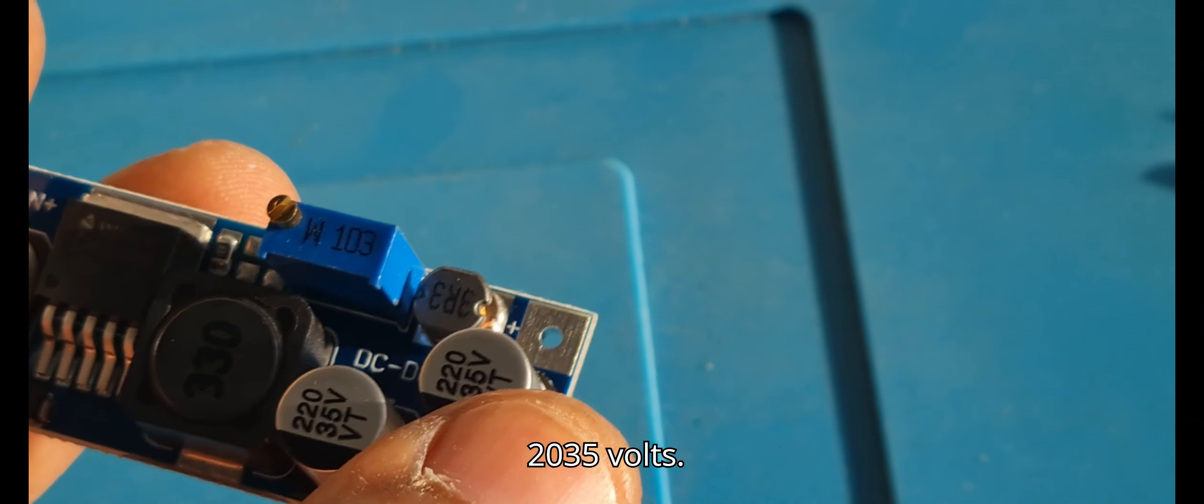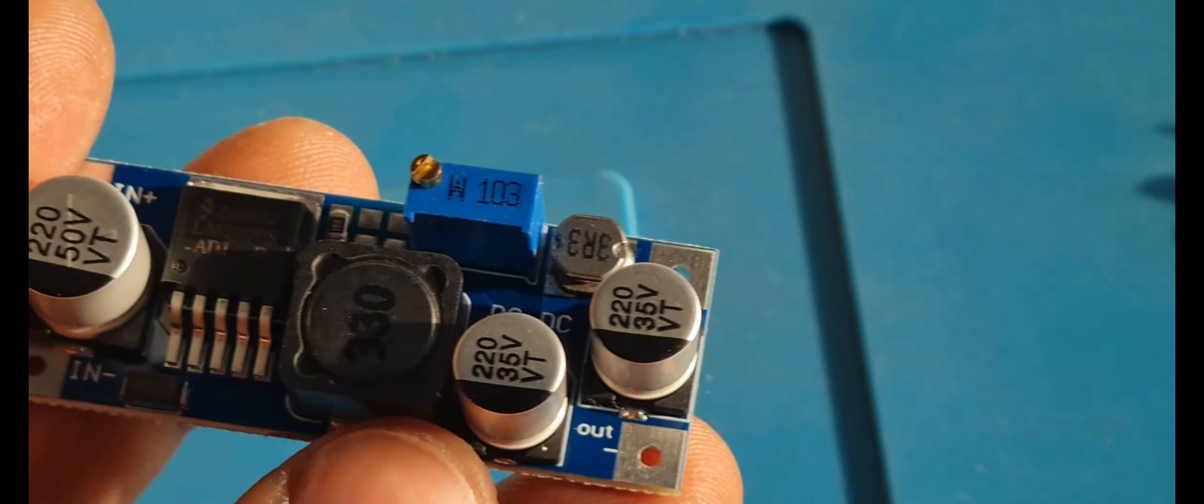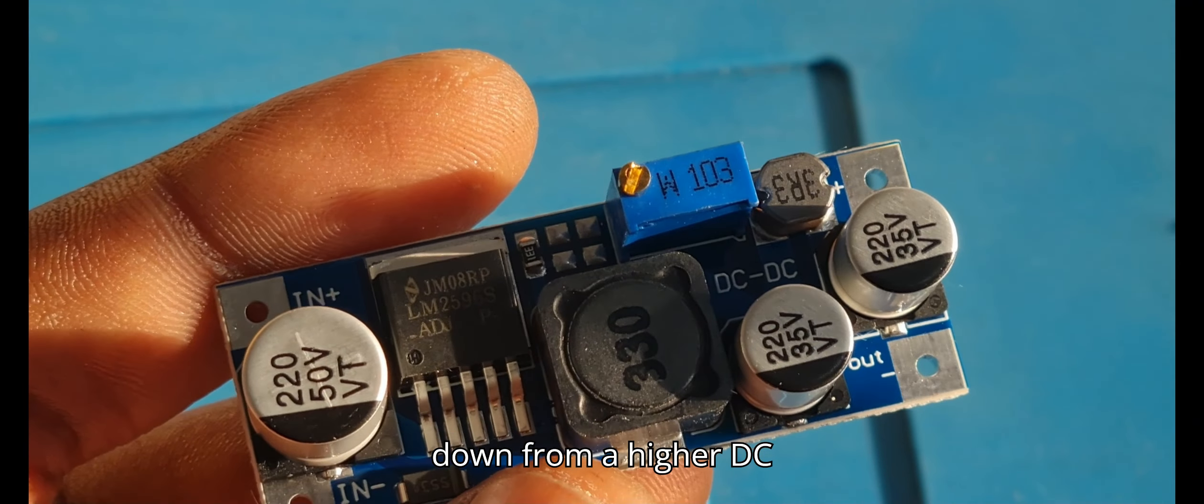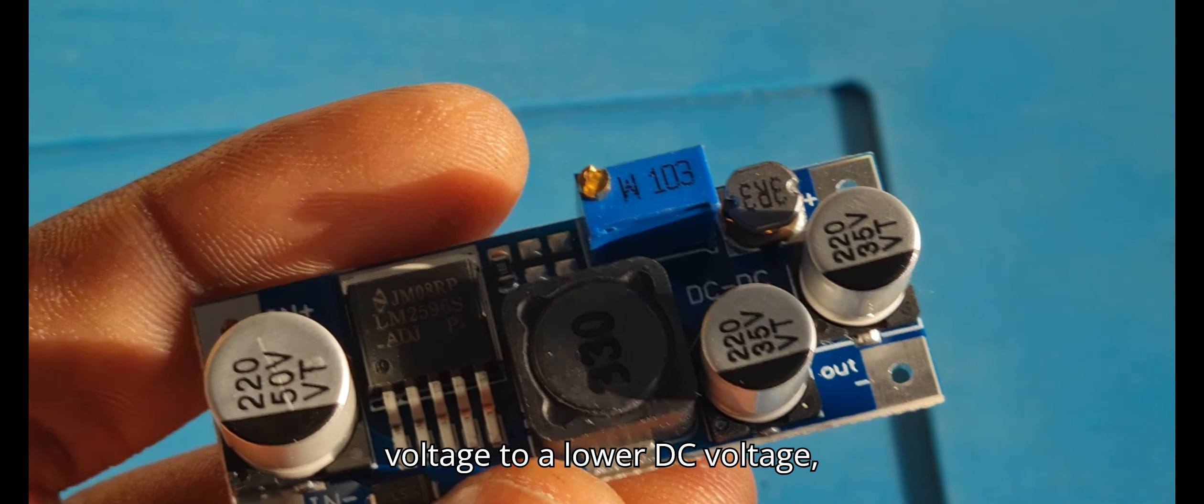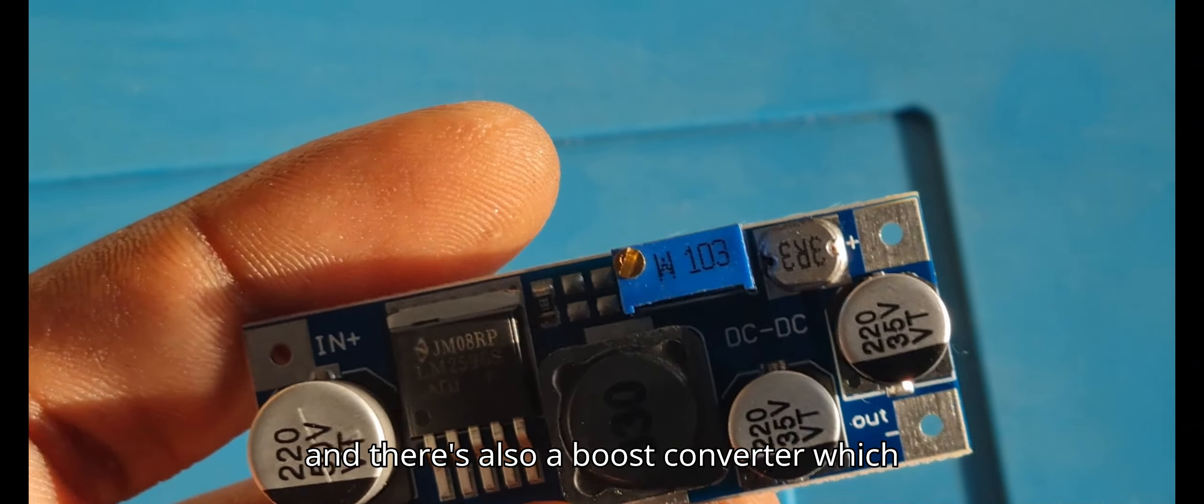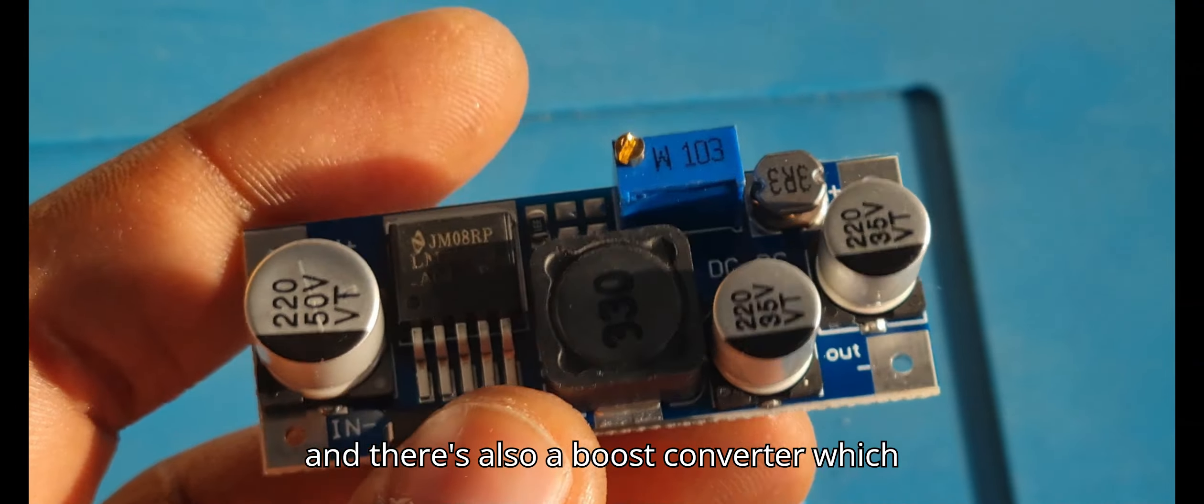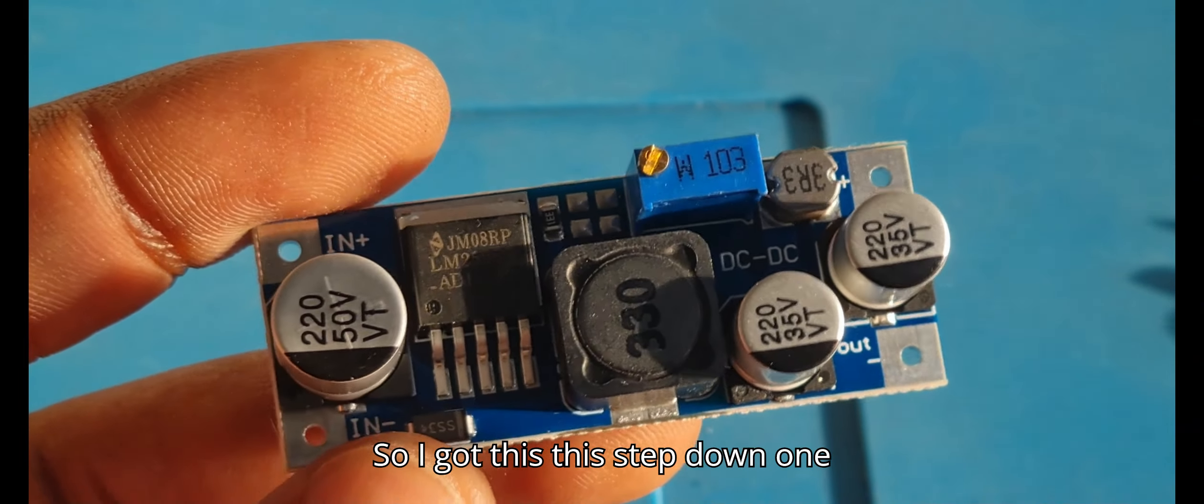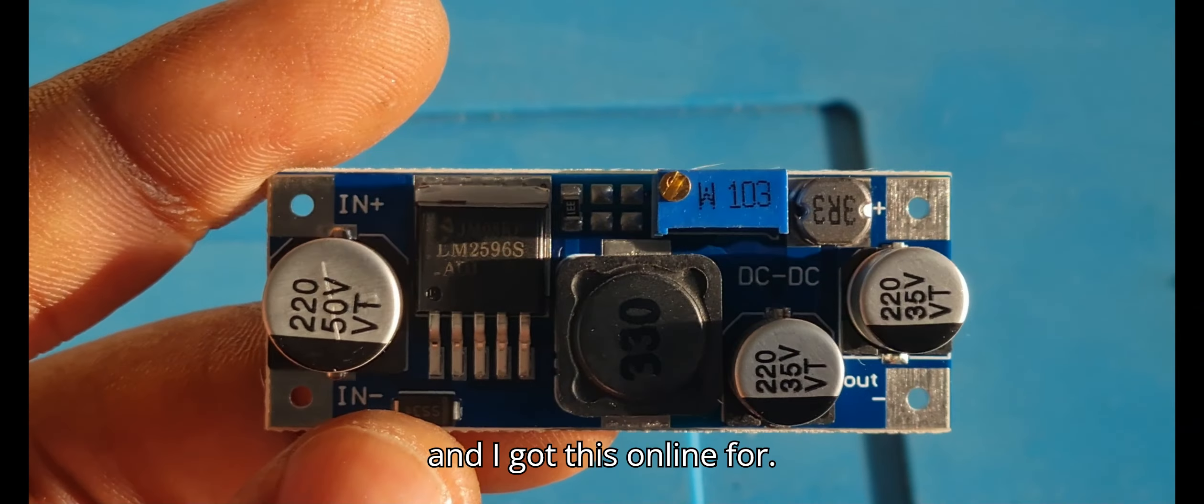capacitors which are 220 microfarads, 35 volts. Basically what this does is step down from a higher DC voltage to a lower DC voltage. There's also a boost converter which can step up the voltage from a lower DC voltage to a higher DC voltage.